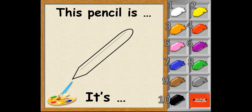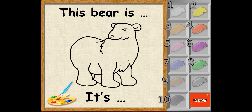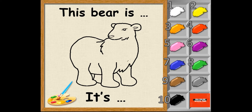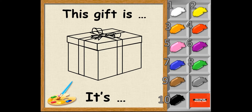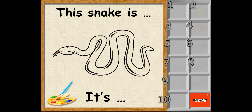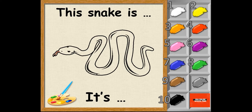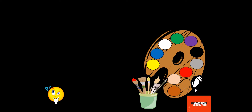This jumper is blue — it's blue. This pencil is black — it's black. This bear is sometimes white, sometimes brown. So this bear is white — it's white. This bear is brown — it's brown. This gift is green — it's green. This snake is black — it's black.